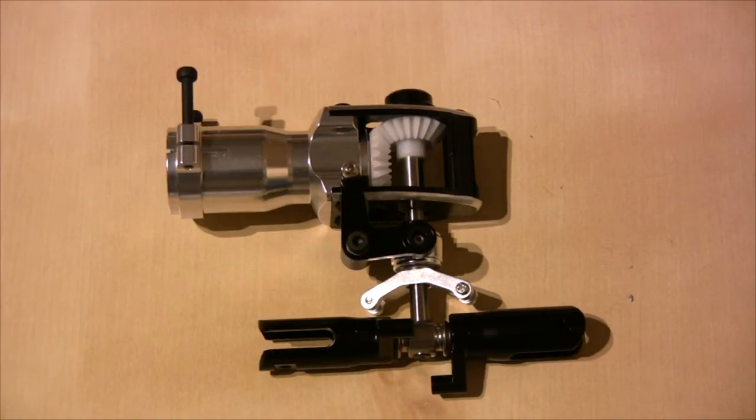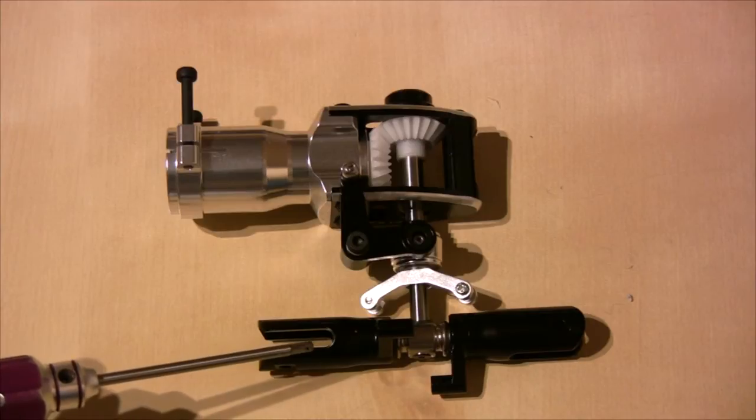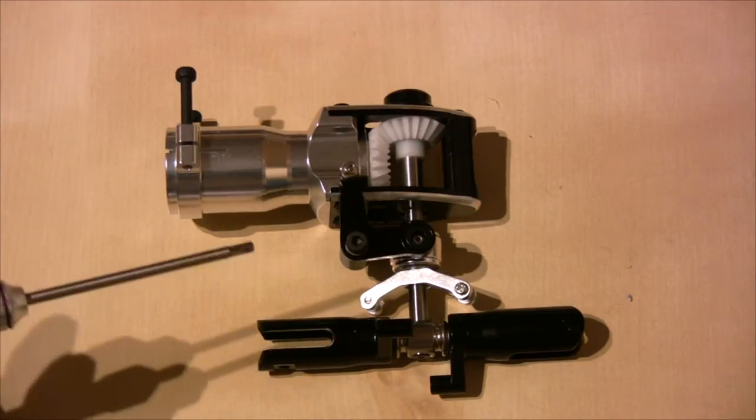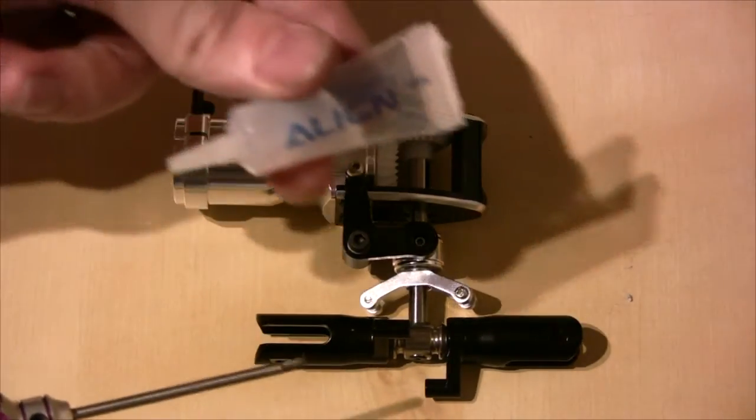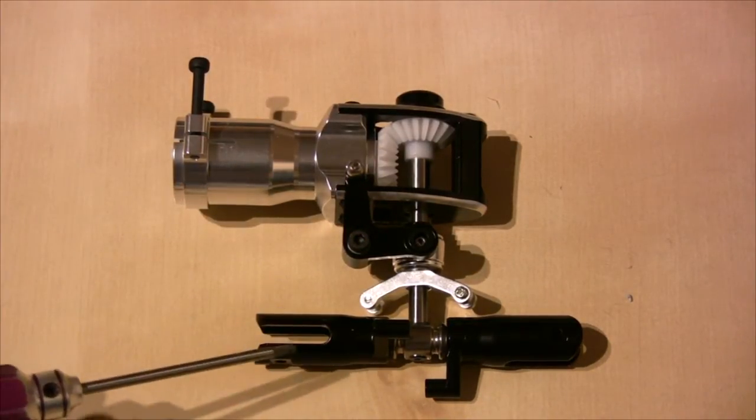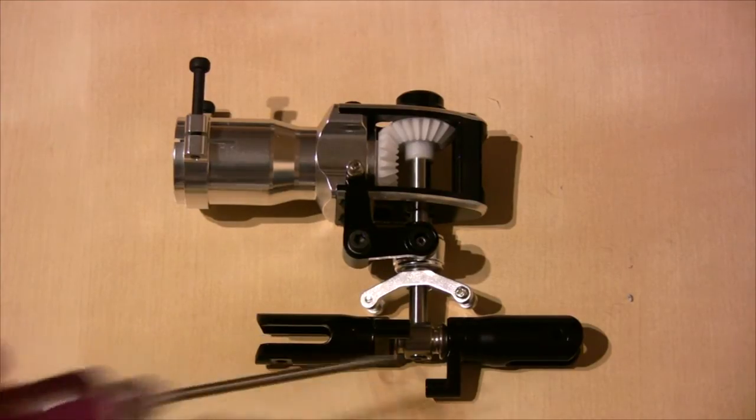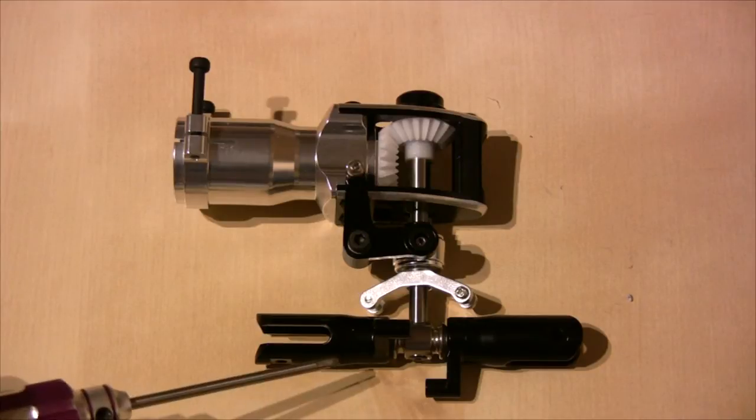I've done some basic prep work on the tail blades. I've uninstalled these, greased and lubricated the bearings with the provided align grease in the kit. There's actually no grease on the bearings at all in the blade grips.